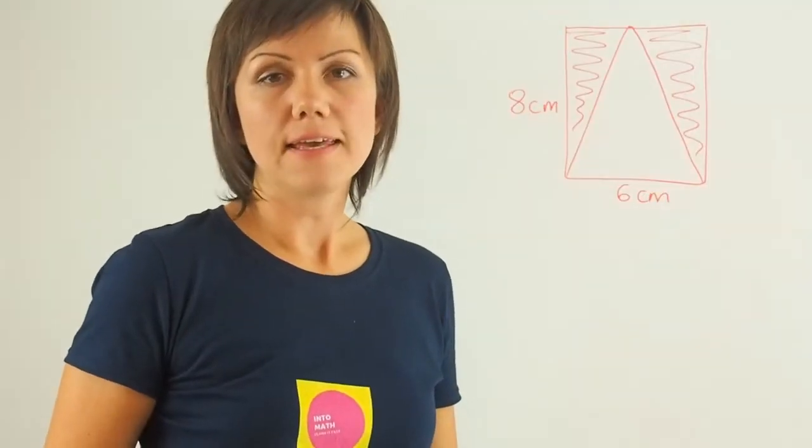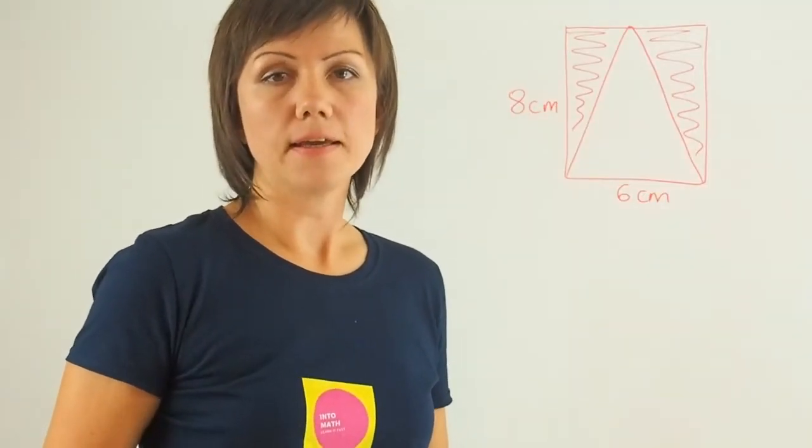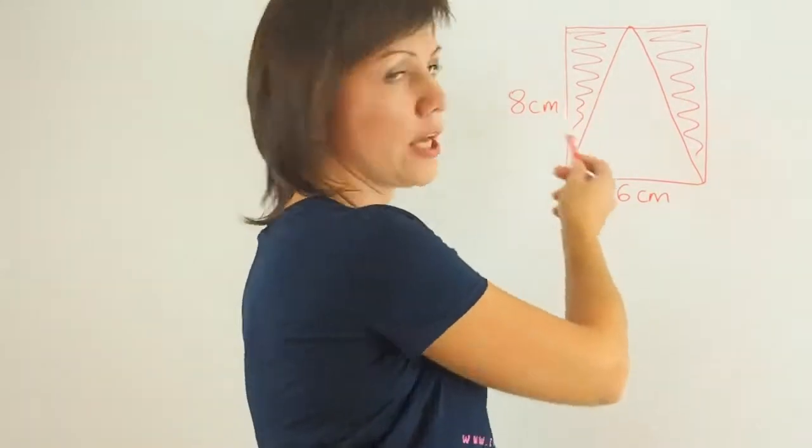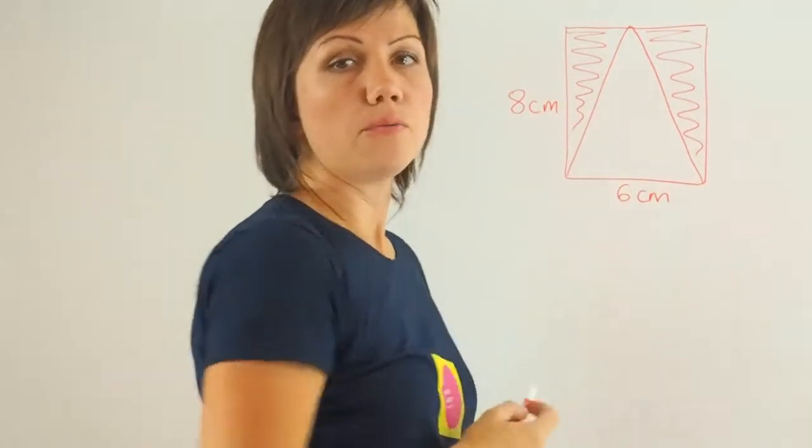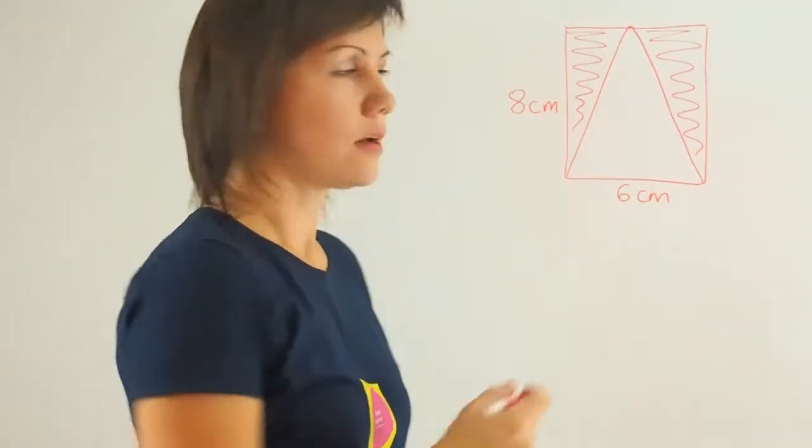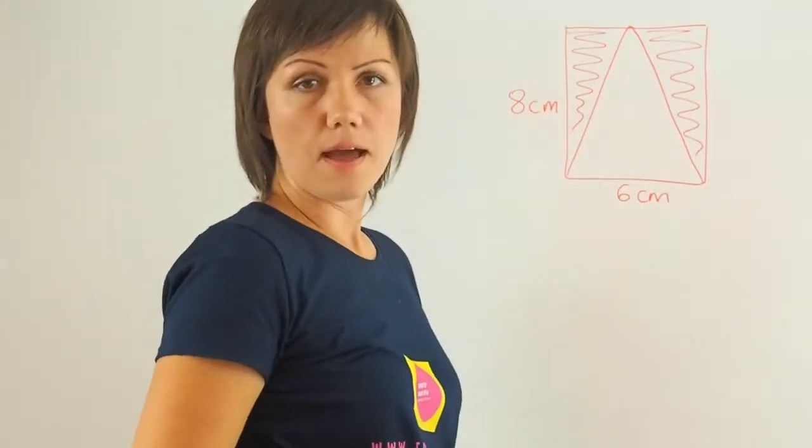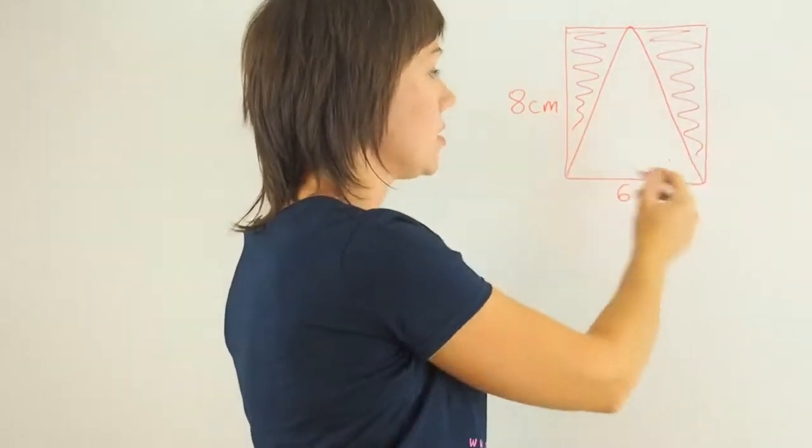This question is asking us to find the area of the shaded region. We have two shapes here. One is a rectangle, and an enclosed shape is a triangle.